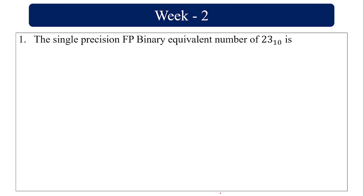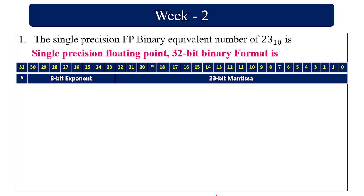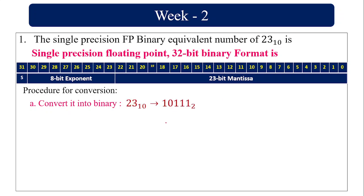The single precision floating point binary equivalent of 23 base 10 — single precision floating point 32-bit binary format has 1 bit for sign, 8 bits for exponent, and 23 bits for mantissa. The procedure for conversion is to first convert 23 into binary and then normalize the binary value into 2 powers.